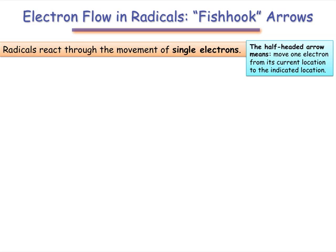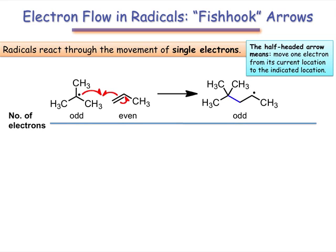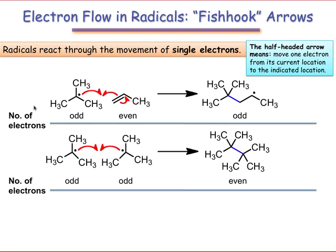In the three examples that follow, pay attention to how the number of electrons and type of bond in the reacting species influence the nature of the product or products. In the first example, a radical reacts with an even electron alkene, producing a radical.